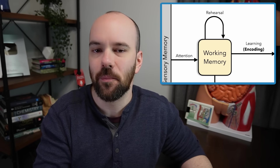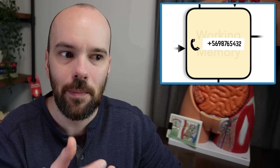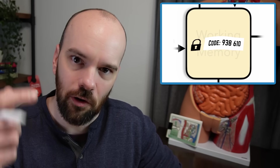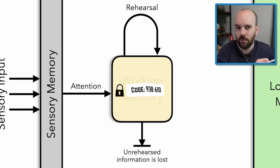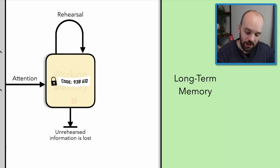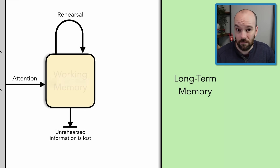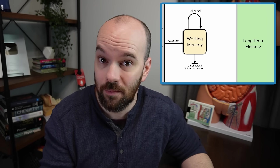Another good example of keeping something in working memory is when I hear a phone number and I'm trying to remember it long enough to enter it into my phone, or maybe I get a two-step verification code and I'm trying to remember those six digits long enough to enter them on my computer. I just say those digits over and over — '25472' or whatever — rehearsing them and keeping them in working memory long enough to use them. Notice I said 'keeping them in working memory' — in both examples, that information is not going to go into long-term memory just from rehearsing a little bit. We can only keep about five to seven pieces of information in working memory at any given time.